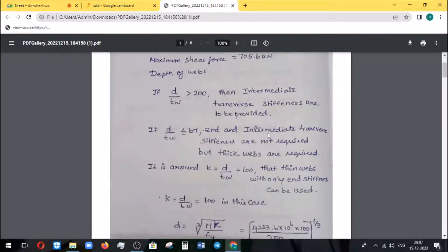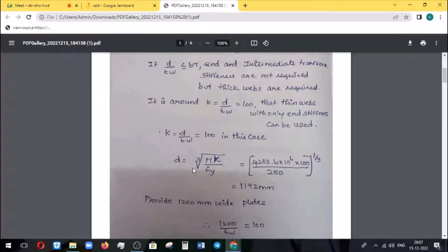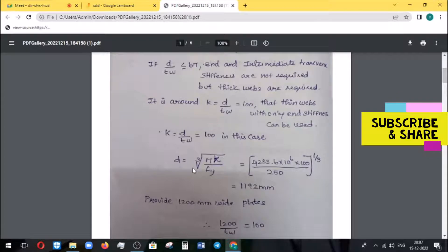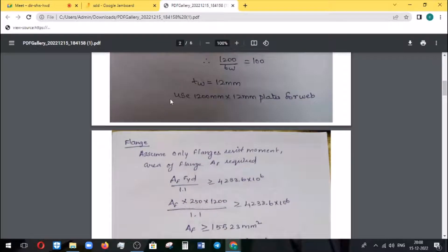End stiffnesses - the condition is K by D, D by TW equals 100. D equal to cube root of MK by Fy. We are putting the moment value along with K and Fy. Here K value is 100, so we substitute whole power 1 by 3. So D is 1,192, almost near 1,200. D by TW equal to 100, so we have to find the thickness of web. That is 1,200 mm into 12 mm plates for web.